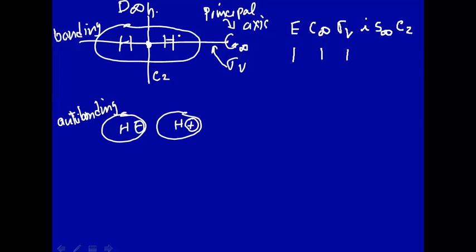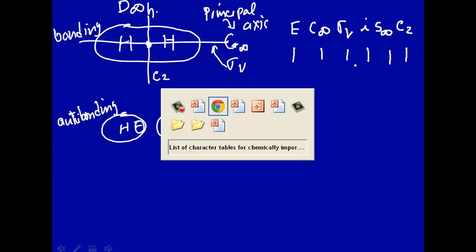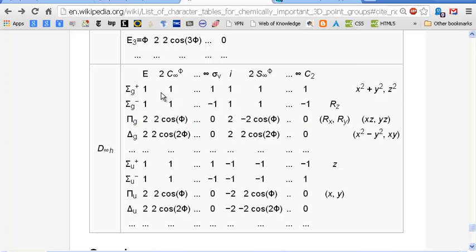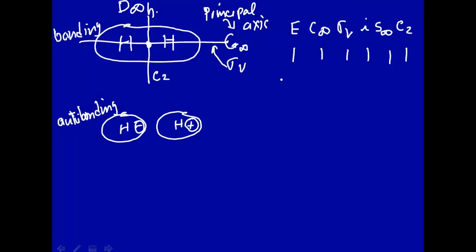Center of inversion — you take something there and invert it. Nothing changes there, no sign change. S∞ — you rotate and then reflect through a plane perpendicular to that rotation. Nothing happens there. C2 — rotate 180 degrees. Nothing happens. So this is all ones. We look up the all-ones row in the character table — that is sigma g plus. Indeed, the bonding orbital has irreducible representation sigma g plus.